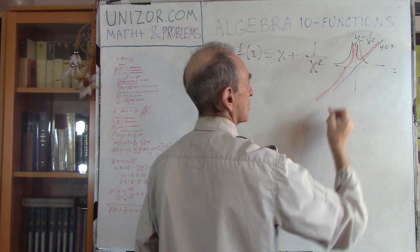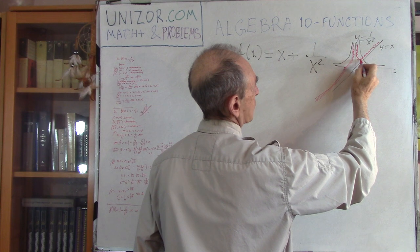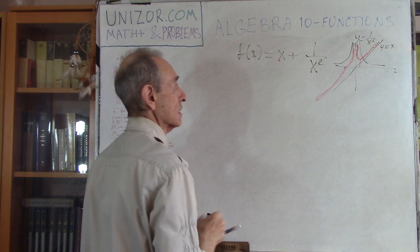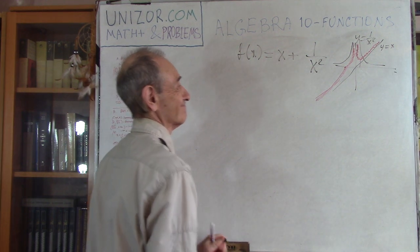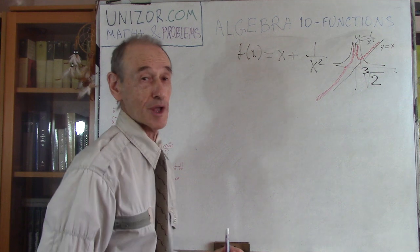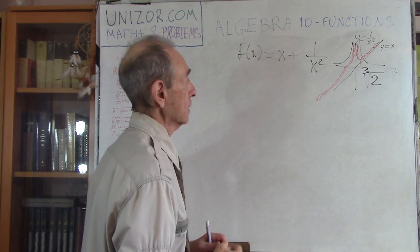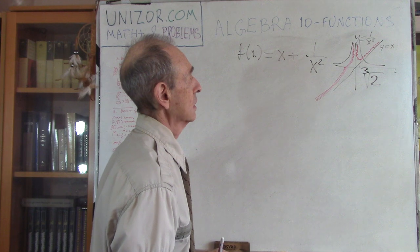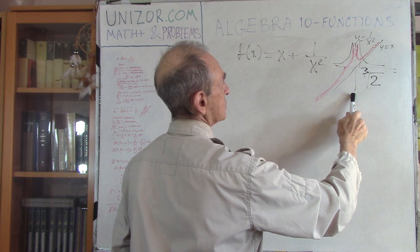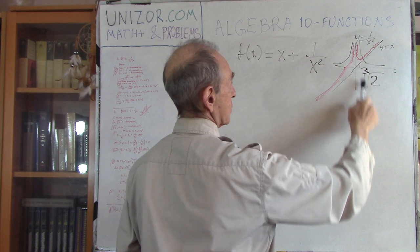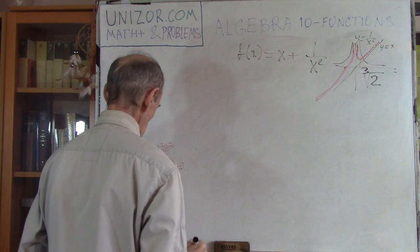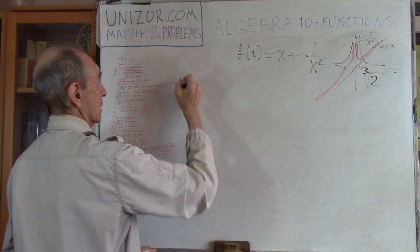The graph suggests the function increases up to zero, then from zero to some point it decreases, and then increases again. That point is given to us: the cubic root of 2. So what we have to prove is that from minus infinity to zero the function is increasing, from zero to ∛2 it is decreasing, and then after that it's increasing again. Let's prove it — three cases.